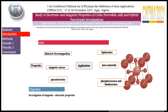The cubic perovskite has many properties like electric, ferromagnetic, and diamagnetic sensors, and piezoelectricity, which apply in many fields like spintronics, laser materials, and phosphorescence. The figure below shows the structure of this cubic with space group Pm3m.